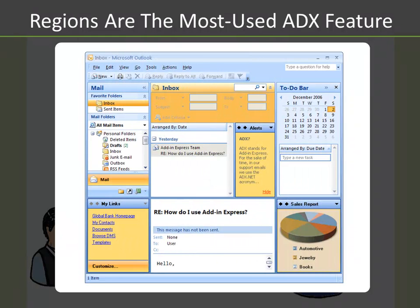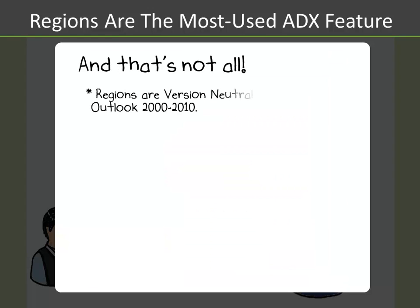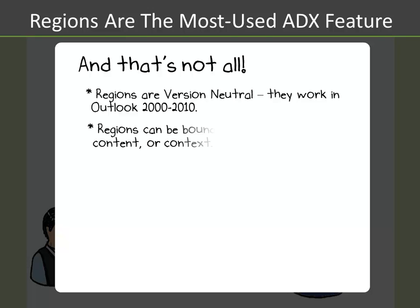Add this all together, and you can build sophisticated Outlook solutions that have impressive results, like this one. And that's not all — regions are version neutral, meaning that they work from Outlook 2000 to Outlook 2010.